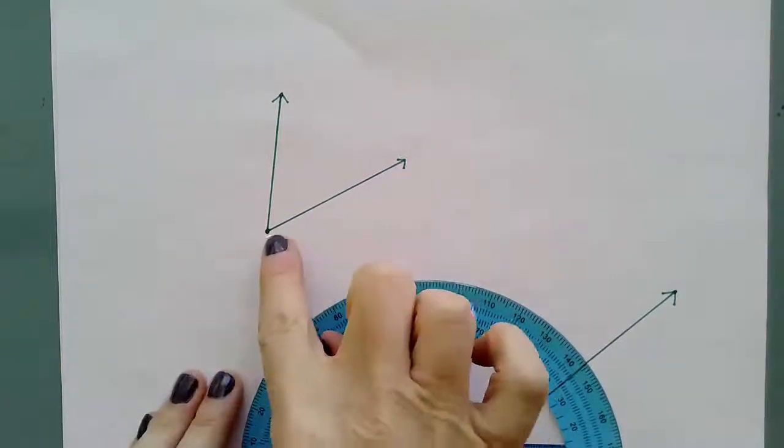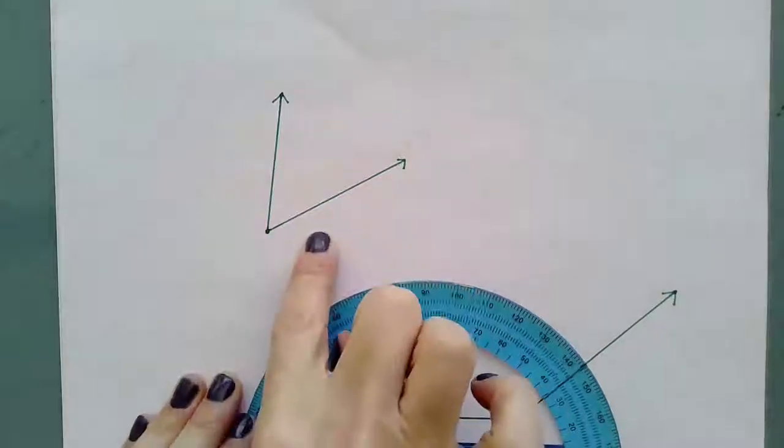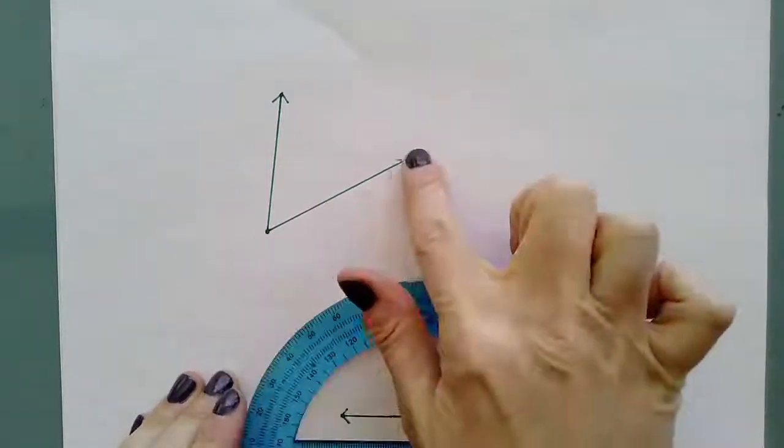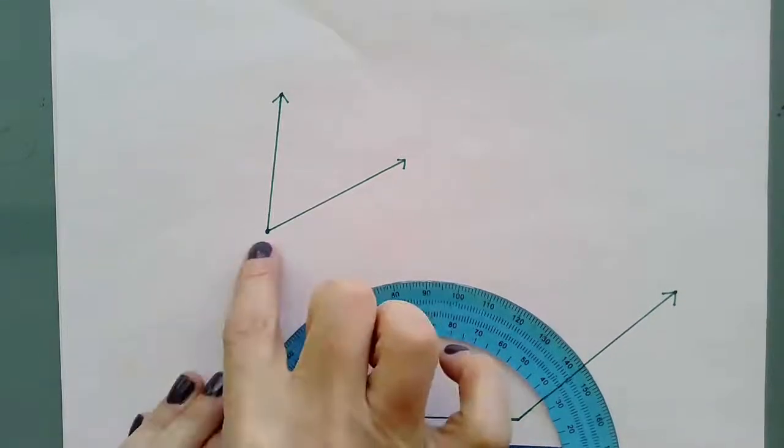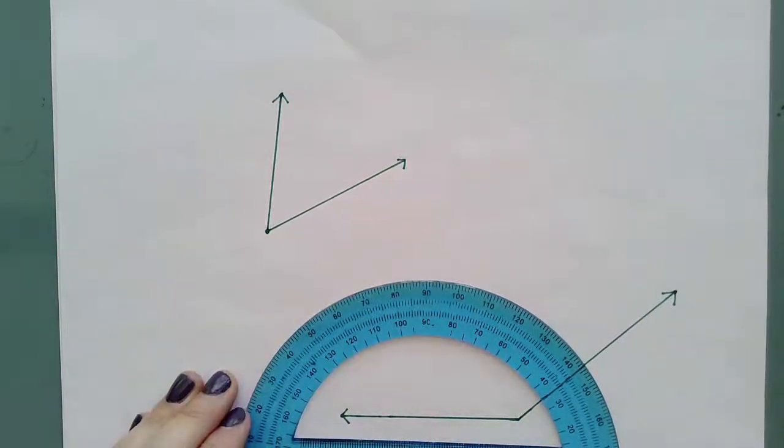But before we get started, let's talk again about our angles here. An angle is formed by two rays, lines, or line segments that meet at a common point and this common point is called a vertex.